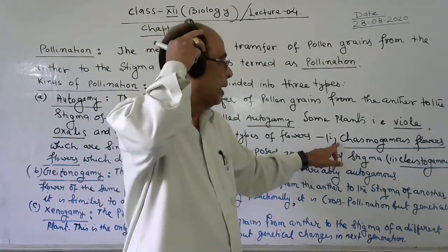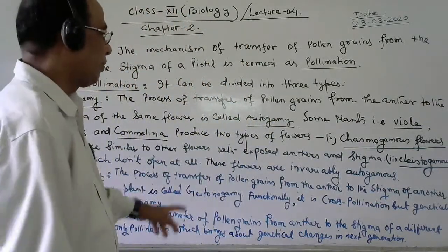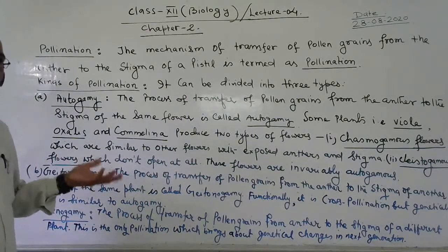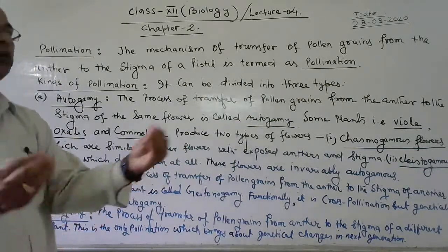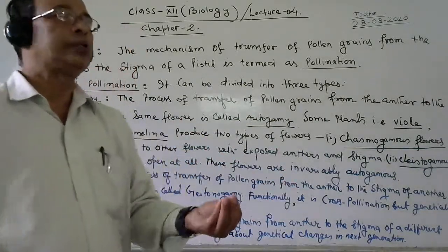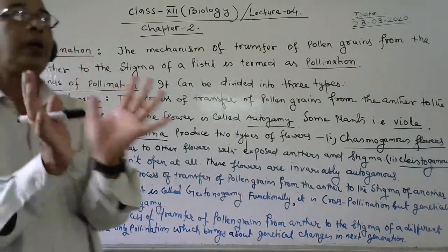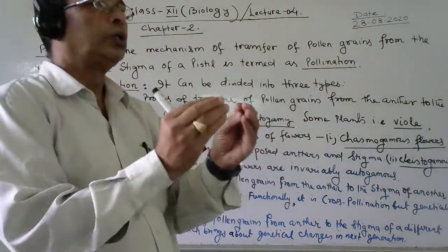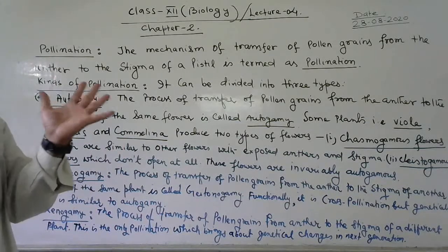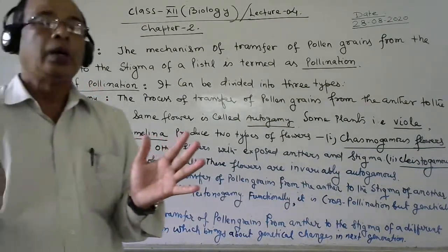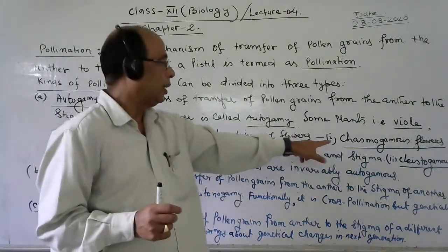One is called the chasmogamous flower and another is called the cleistogamous flower. The chasmogamous flower is similar to the other flowers. Both the stamens and the stigma are exposed — meaning you can see them from the outside. The chasmogamous flower is formed in the upper part of the plant body.